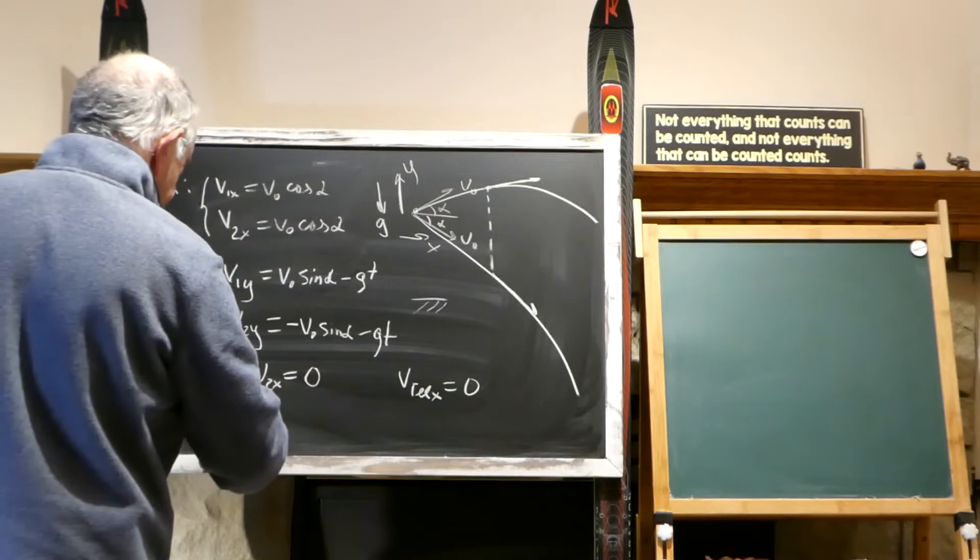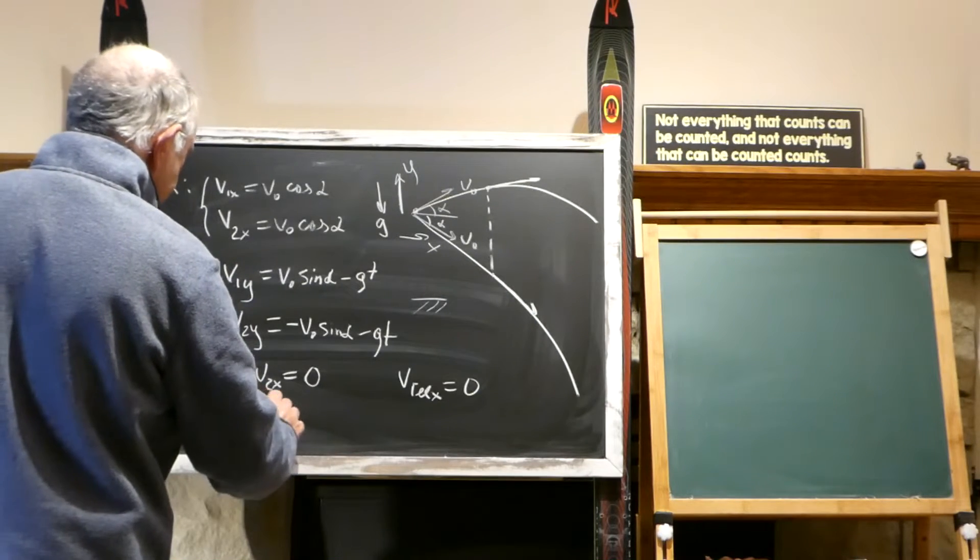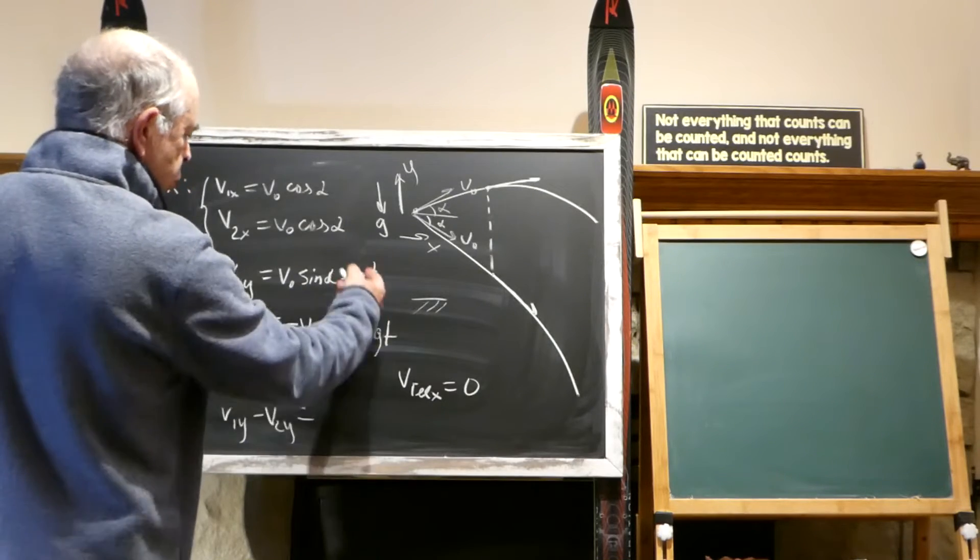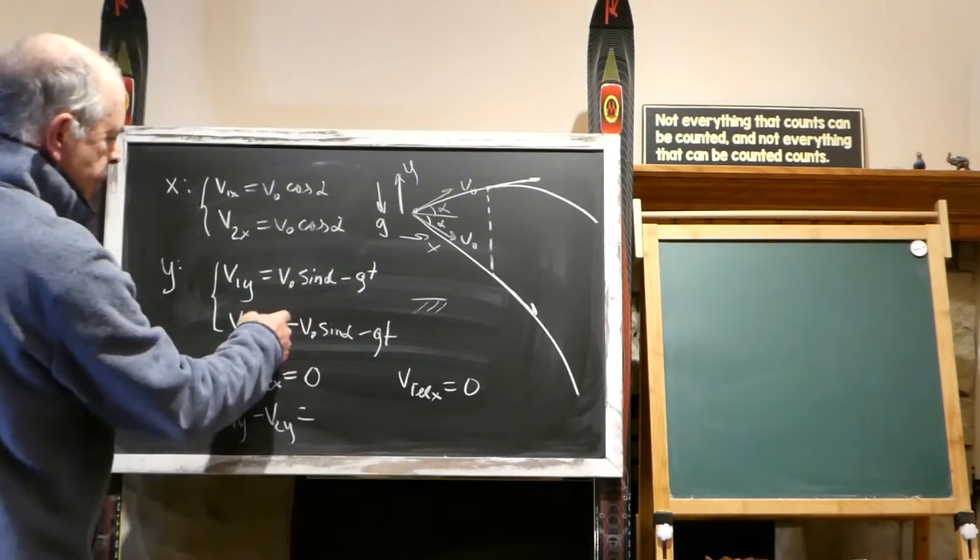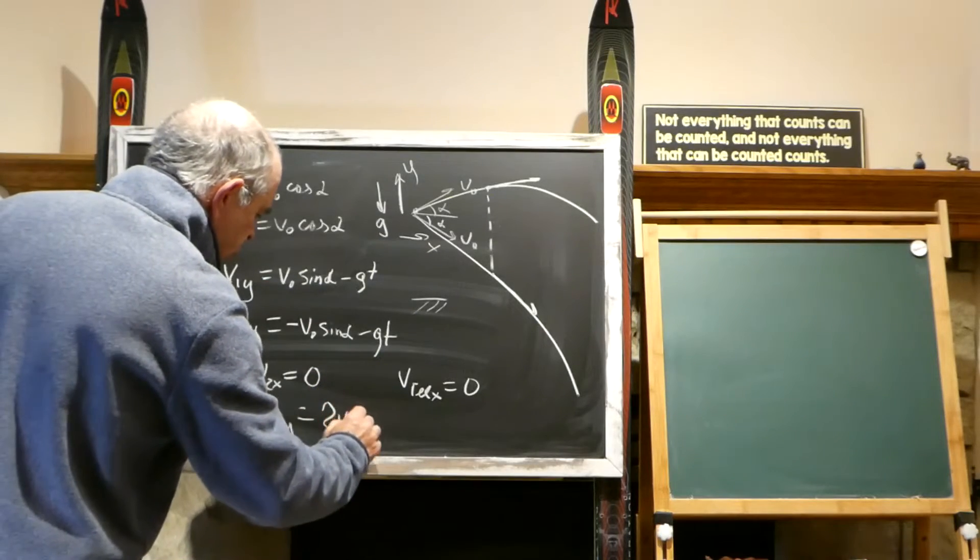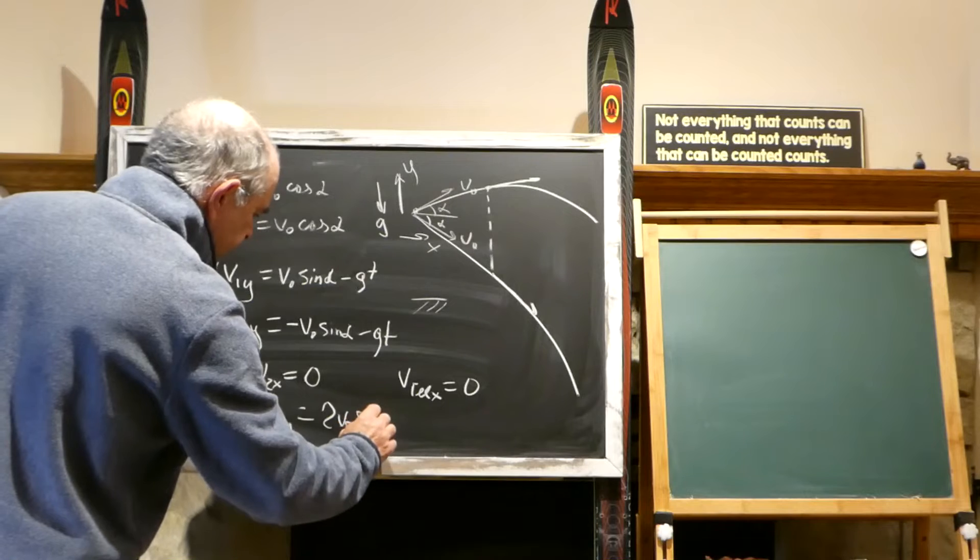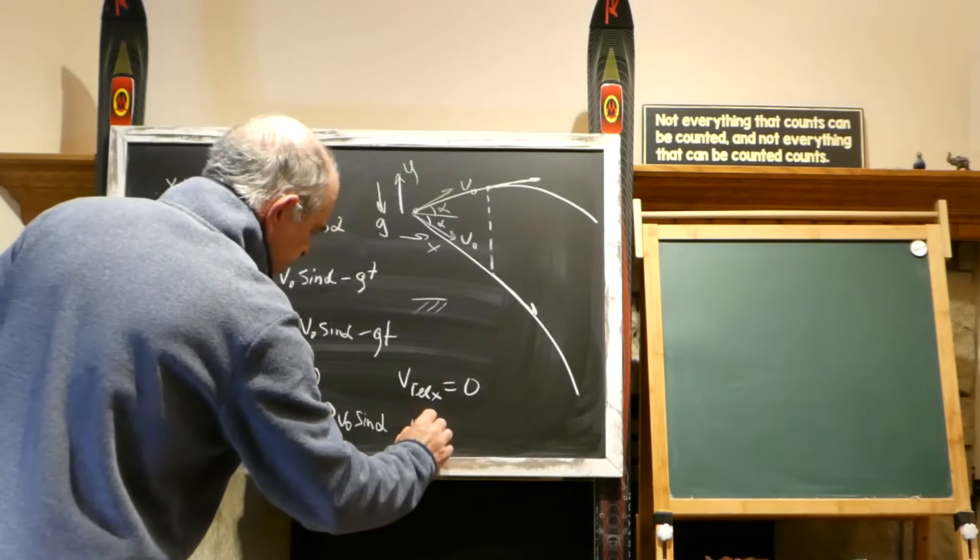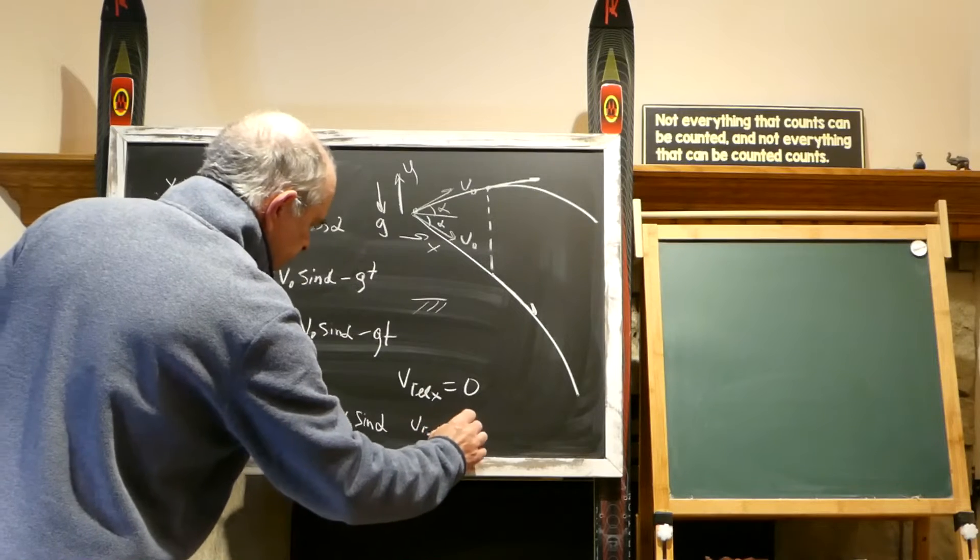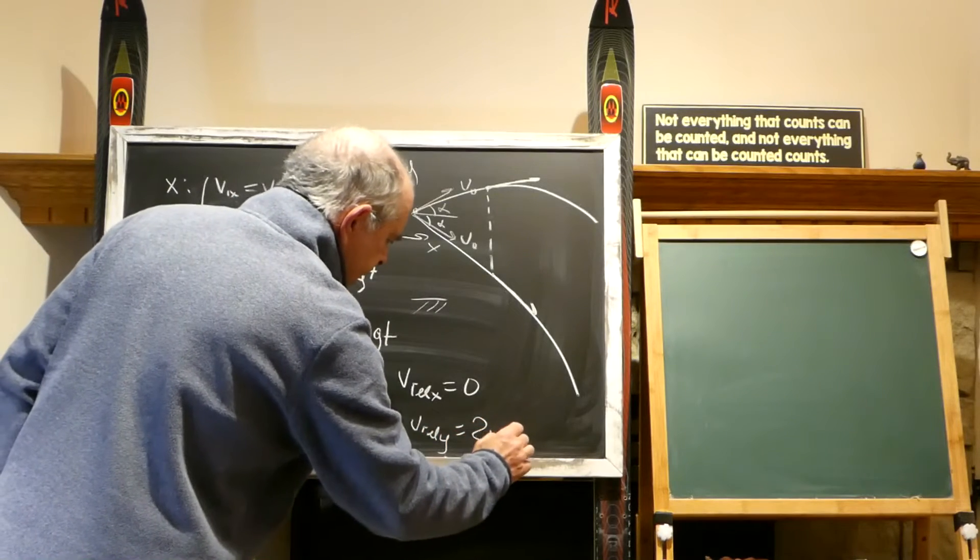And if we subtract v1y minus v2y, we will get those two would go away and this would be double because when we're subtracting, we will have 2v0 sine alpha. And that means v relative y equals 2v0 sin alpha.